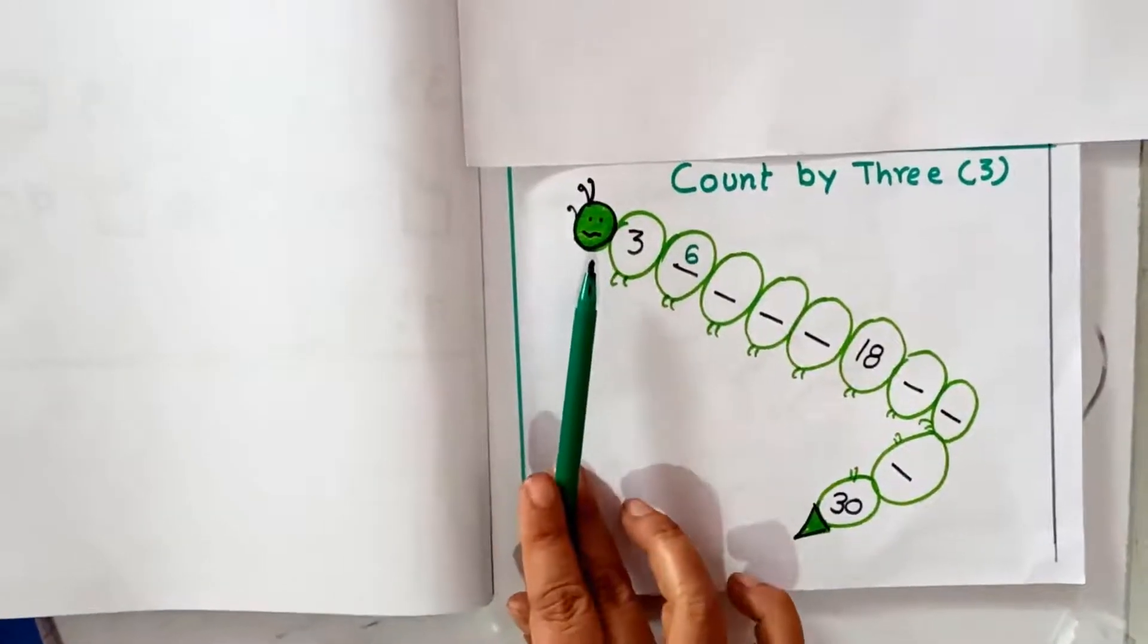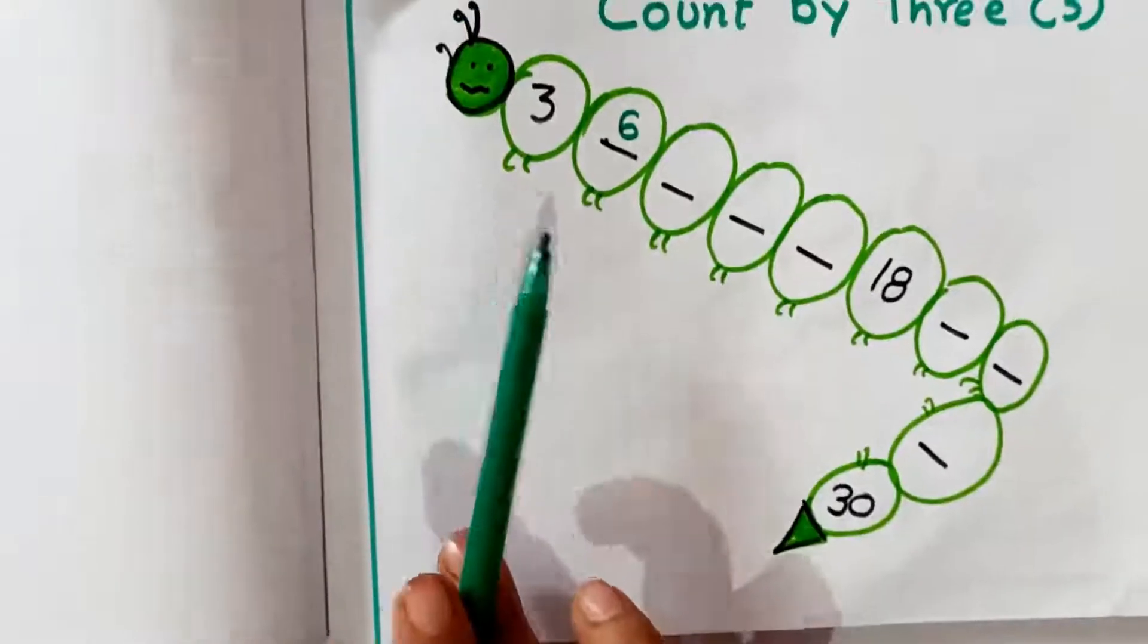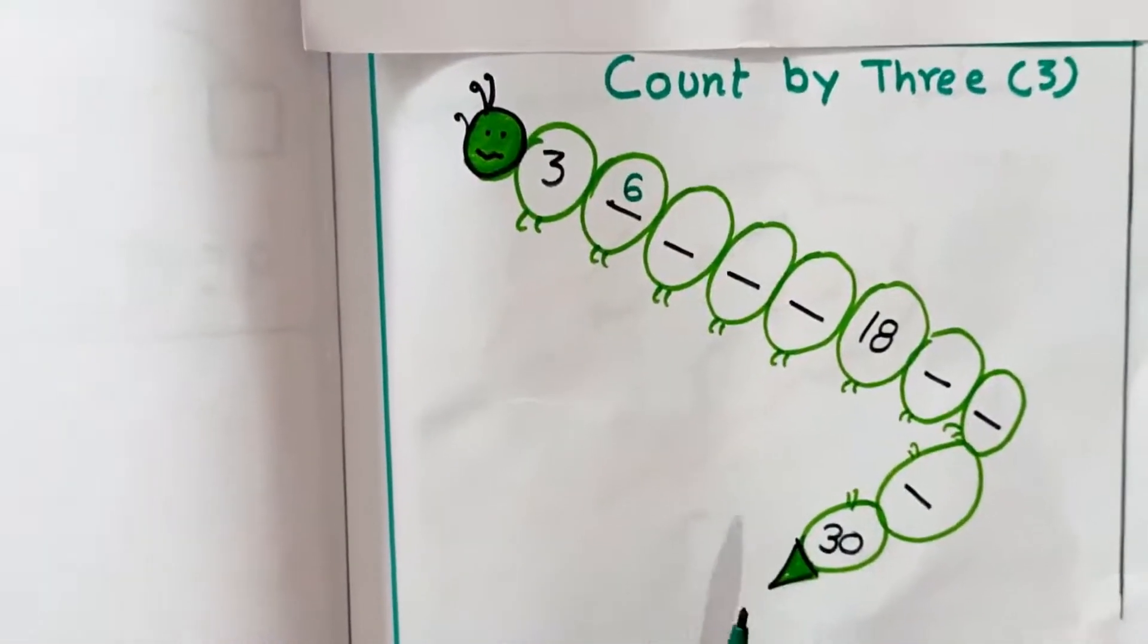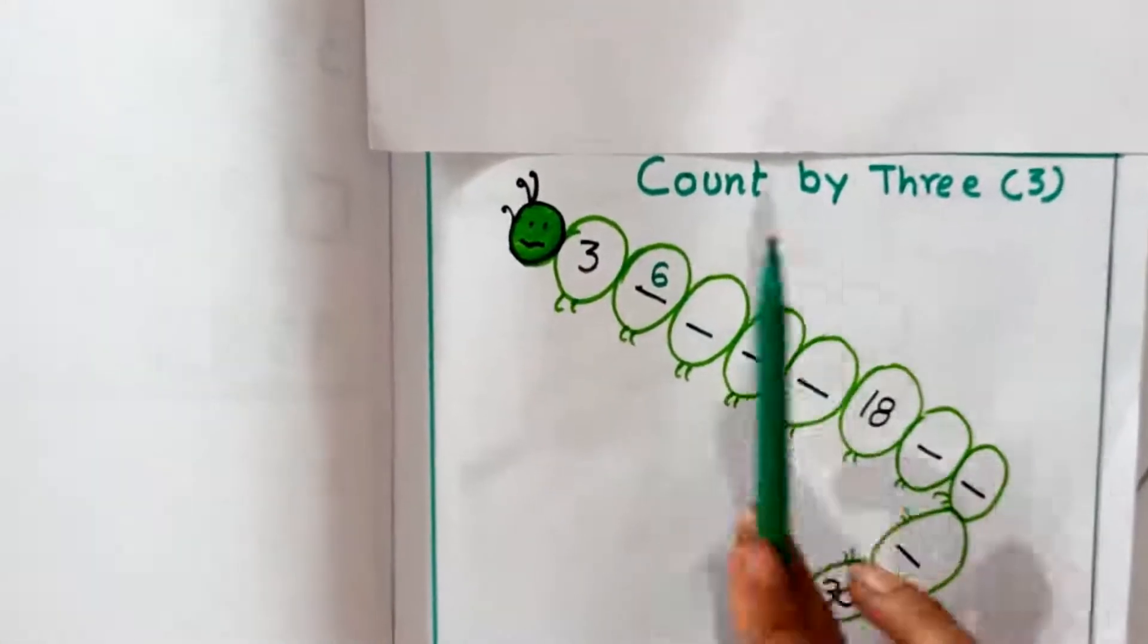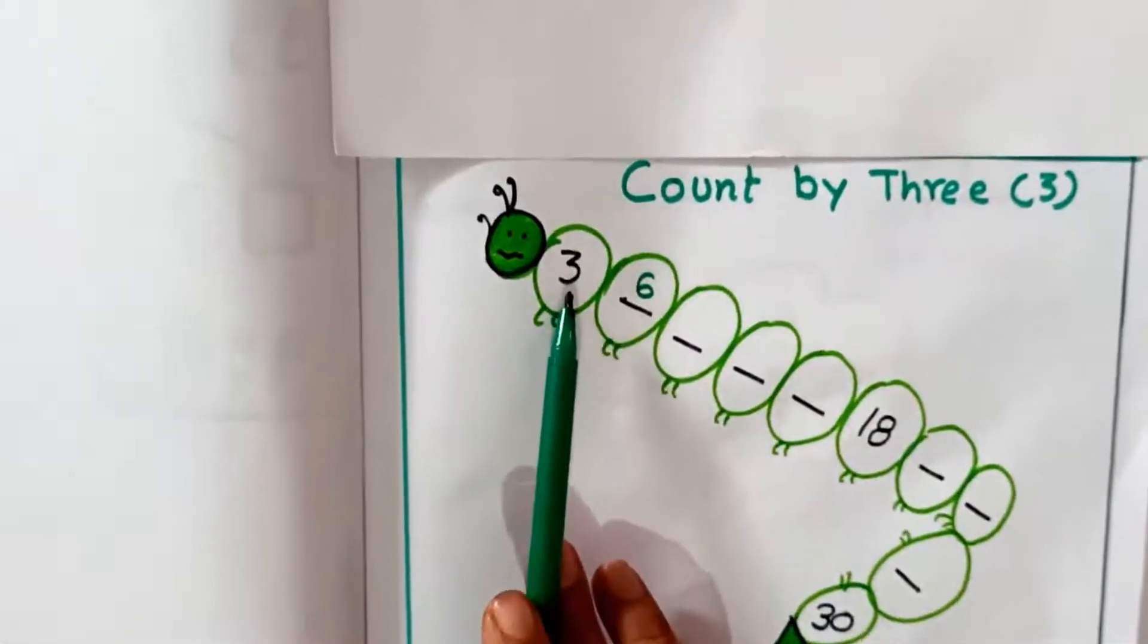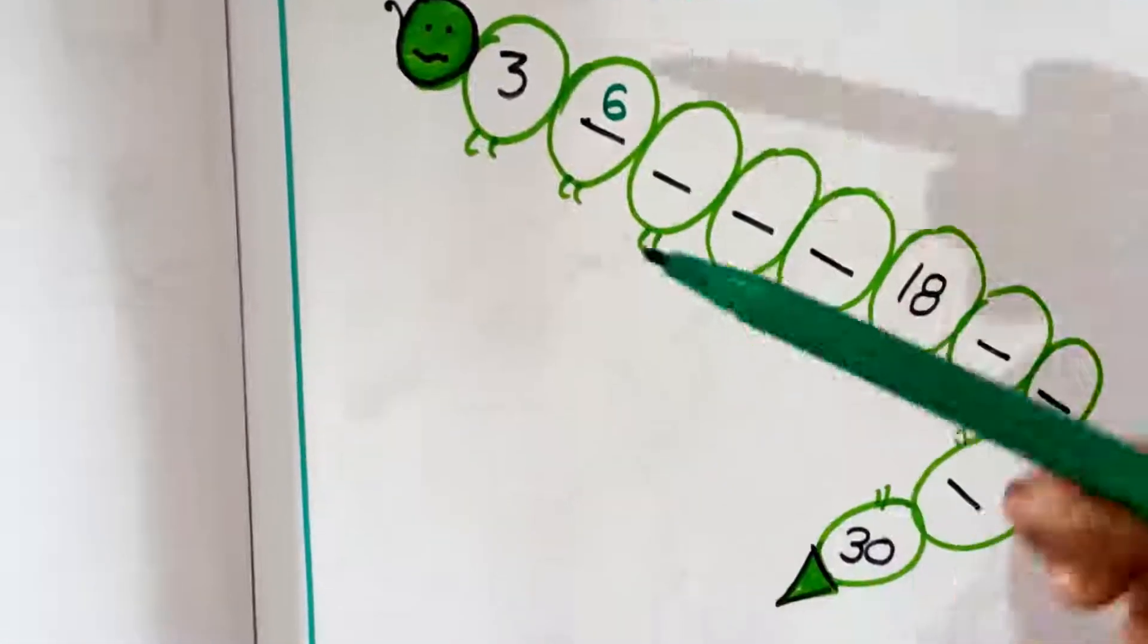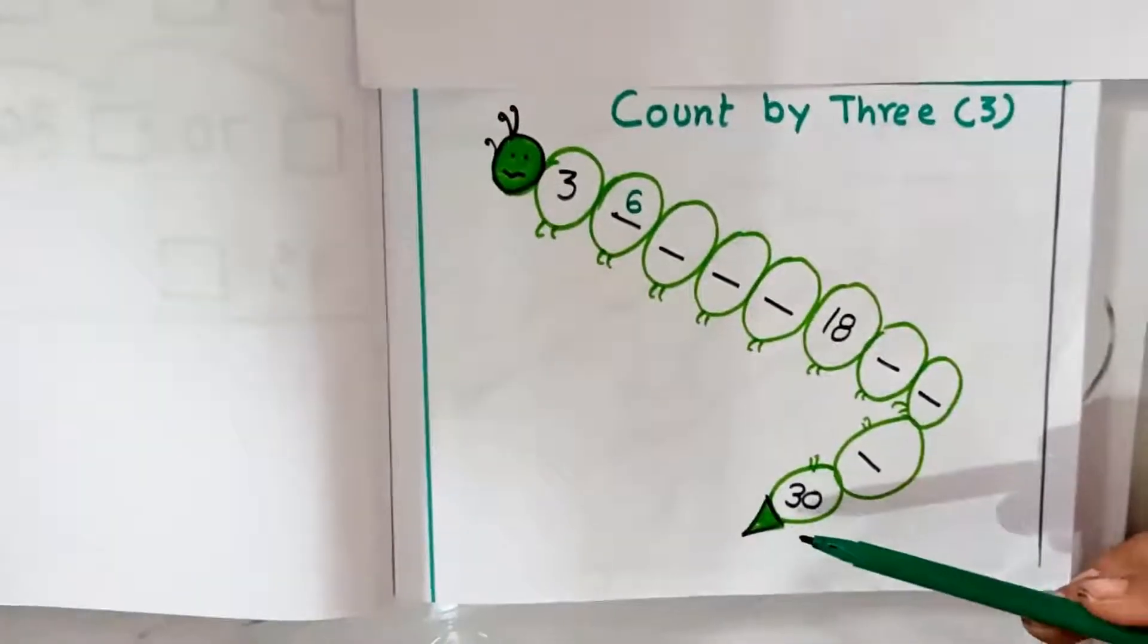Children, this is a beautiful green caterpillar. You can draw the caterpillar and practice skip counting by 3. Count by 3 up to 30. So this is number 3, next number is 6. This way, you have to do the worksheet.